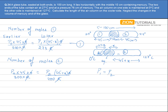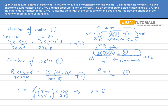Dividing equation one by equation two and applying P1 equals P2, we get 1 equals (45 minus x) divided by (45 plus x) times 400 divided by 273. Since P1 equals P2, those terms cancel. Solving this equation, x comes out to be approximately 8.49 centimeters. The length of the air column on the cooler side is 45 minus x, which equals 36.51 centimeters. That is the answer.